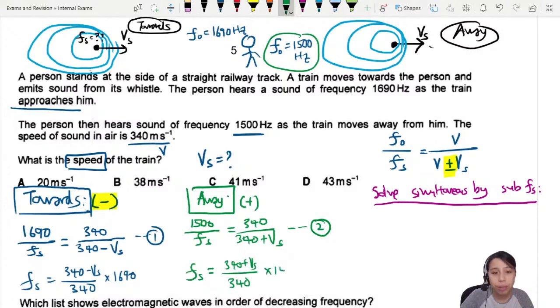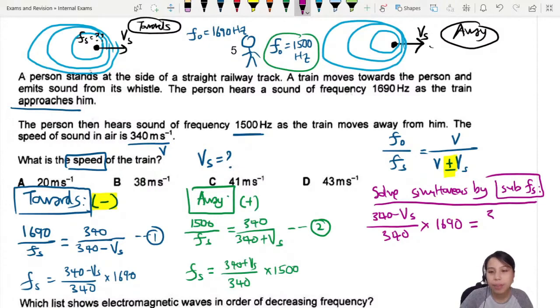Now I have f_s and f_s, I can equate or substitute into each other and I get 340 minus v_s over 340 times 1690 equals 340 plus v_s over 340 times 1500. Many minutes later, you should get v_s of roughly 20.3 meters per second.